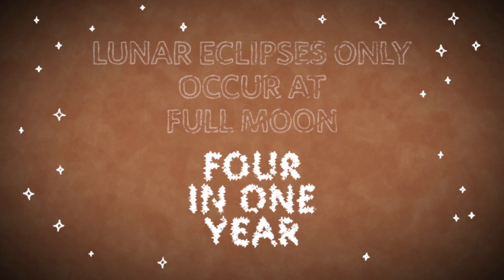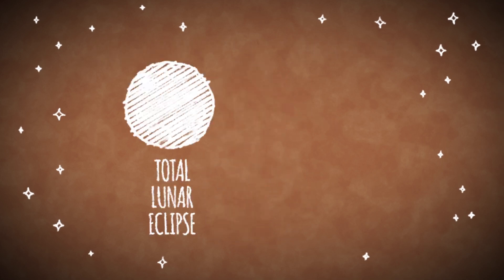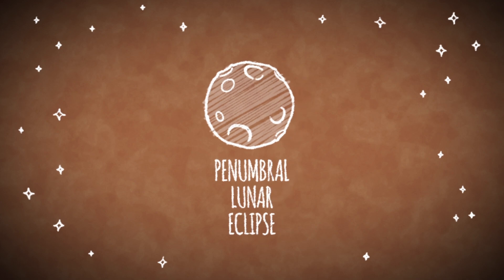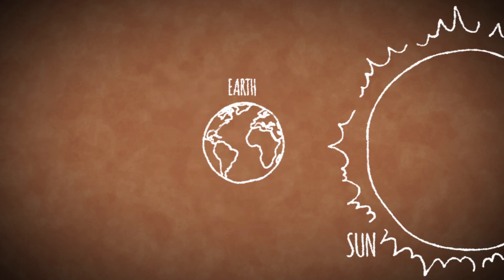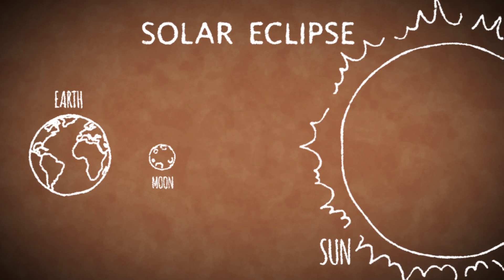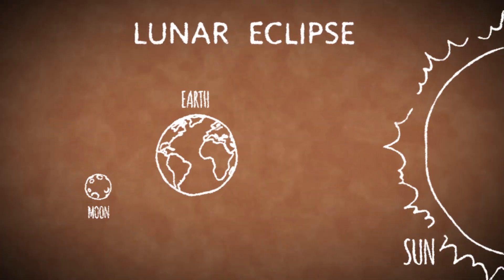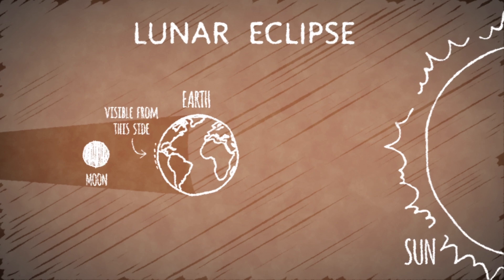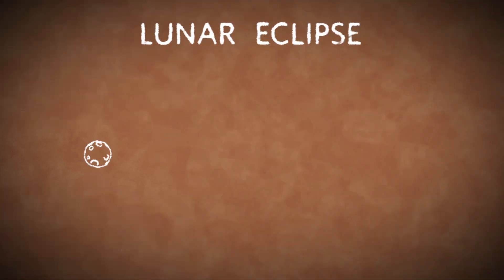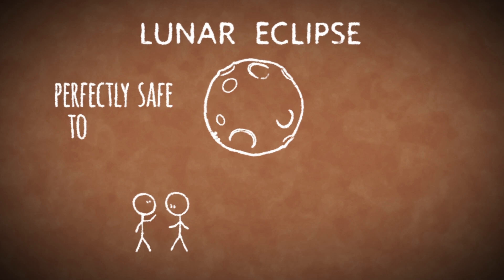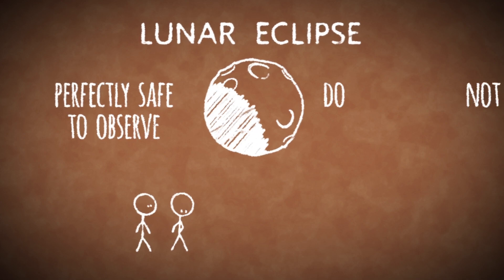Usually in some combination of total, partial, and the barely noticeable penumbral eclipses. Remember that while solar eclipses can be seen only from certain areas on Earth's surface, lunar eclipses can be seen from the entire side of the planet from which the moon is visible. And lunar eclipses are perfectly safe to observe and do not require any special eye protection or filters.